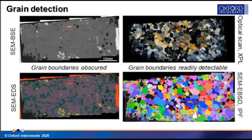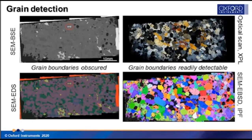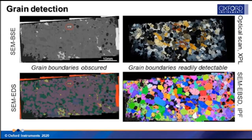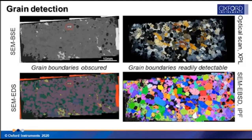Analysts with optical microscopy experience know that grain detection is intuitive to the human eye. Optical scans confirm that BSE images and EDS mapping show variations depending on element density and chemistry respectively, but struggle with direct grain detection. EBSD, on the other hand, can readily detect grains as shown in the whole thin section EBSD map, without the need to apply image analysis software.